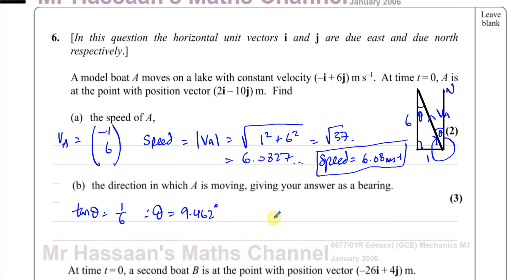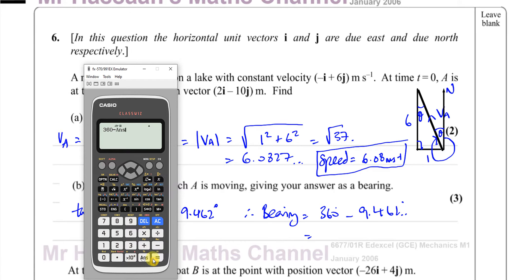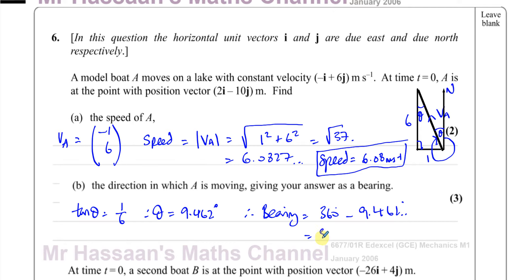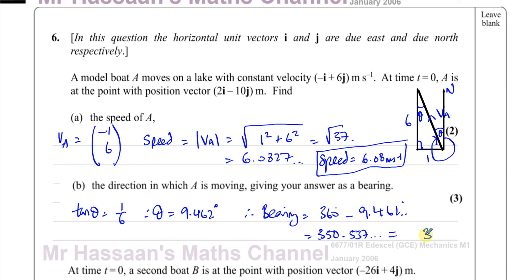So the bearing is 360 degrees minus 9.462 degrees, which gives 350.537 degrees. Bearings should always be given to the nearest degree, so the answer is 351 degrees. Normally angles are given to one decimal place, but bearings are always rounded to the nearest whole degree.